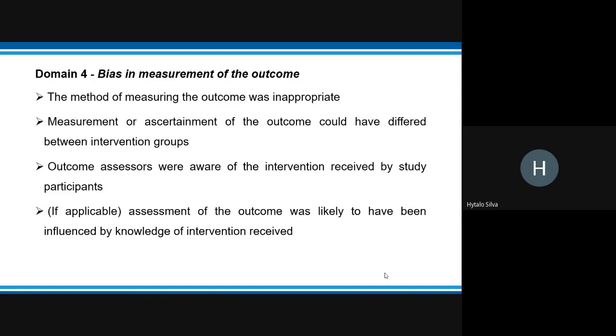Domain 4: Bias in measurement of the outcomes. The methods of measuring the outcomes was inappropriate, differing between intervention groups. Outcome assessors were aware of the intervention received by study participants. If applicable, assessment of the outcomes was likely to have been influenced by knowledge of the intervention received.